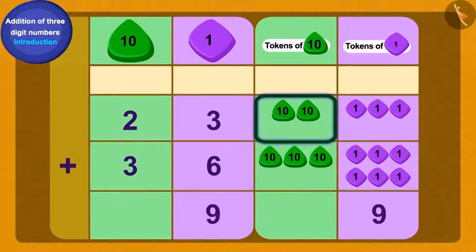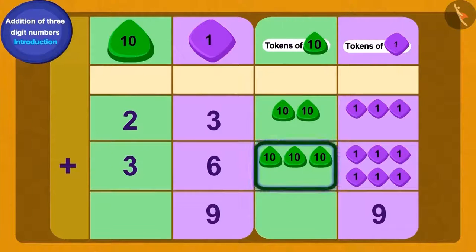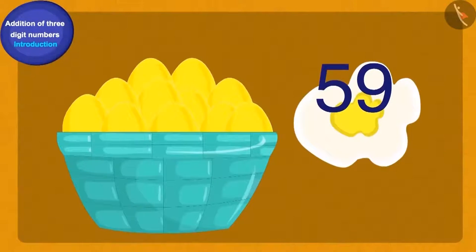Now if we add 2 tens tokens and 3 tens tokens, how many do we get? Perfect! 5 tens tokens. Thus, Baban had a total of 59 gold eggs.